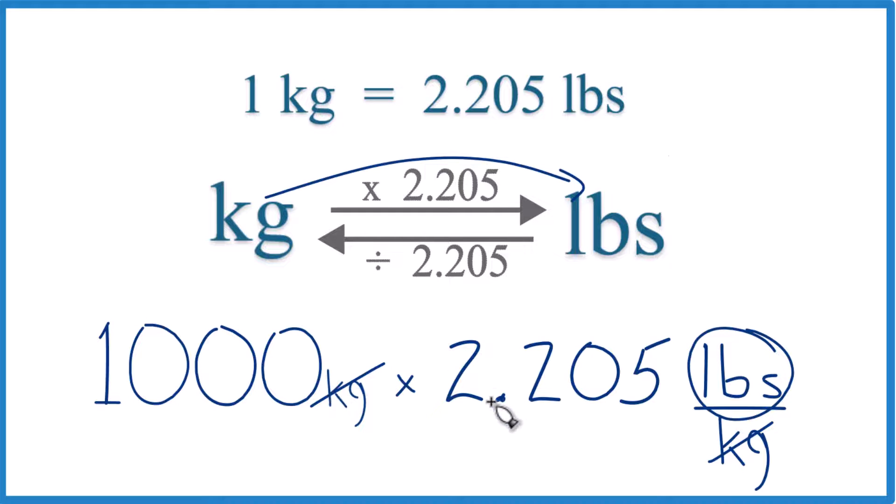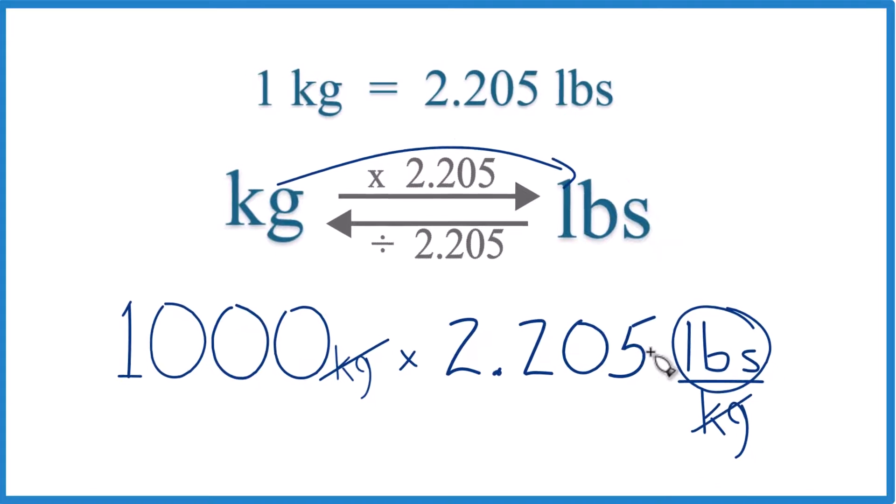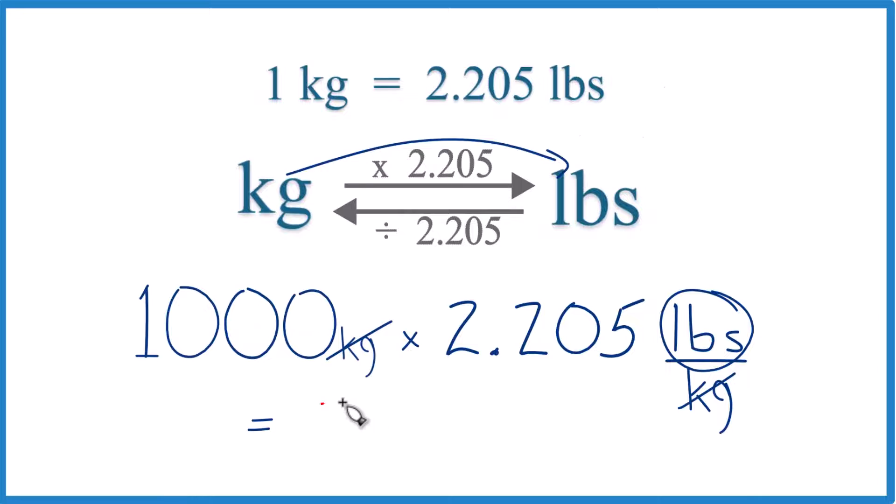So we take a thousand times 2.205 pounds. We end up with 2205. The units, we went kilograms to pounds. We have pounds here. So the units are pounds.